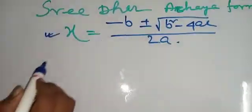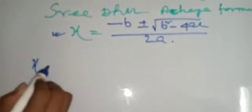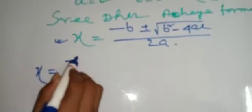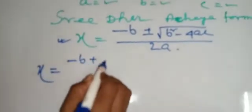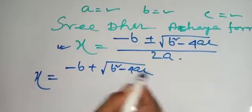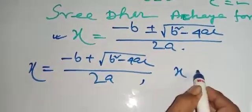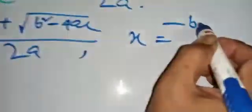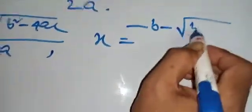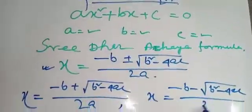This you can write the value of x in two times. minus b plus root over b square minus 4ac by 2a. And another equal to minus b minus root over b square minus 4ac by 2a.